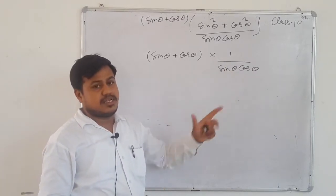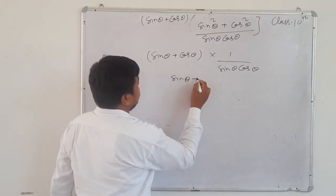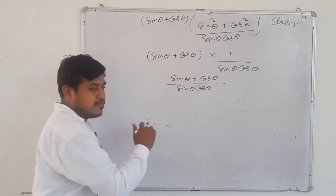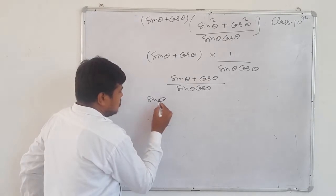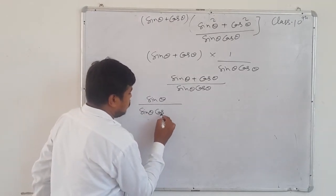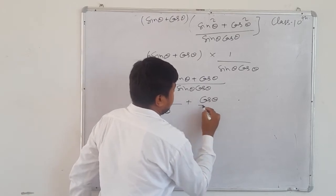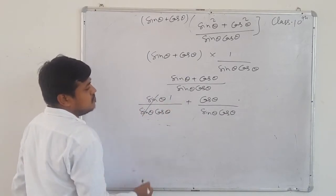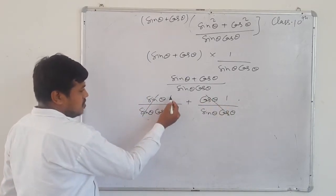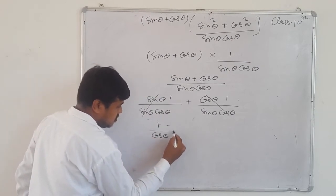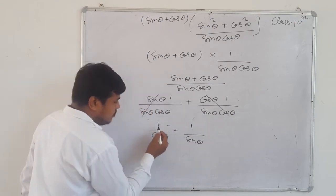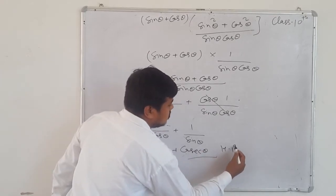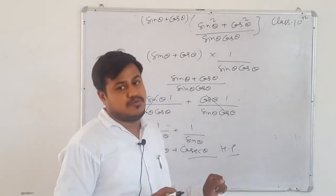The numerator sin θ + cos θ cancels with the denominator sin θ + cos θ. So we get 1/(sin θ·cos θ). Dividing separately: sin θ/(sin θ·cos θ) + cos θ/(sin θ·cos θ). Sin cancels sin → 1/cos θ; cos cancels cos → 1/sin θ. And 1/cos θ is sec θ, 1/sin θ is cosec θ — equals RHS. Hence proved.